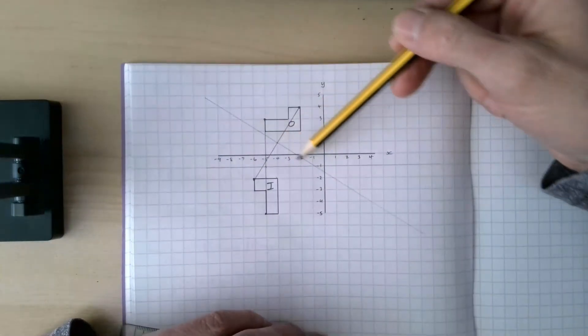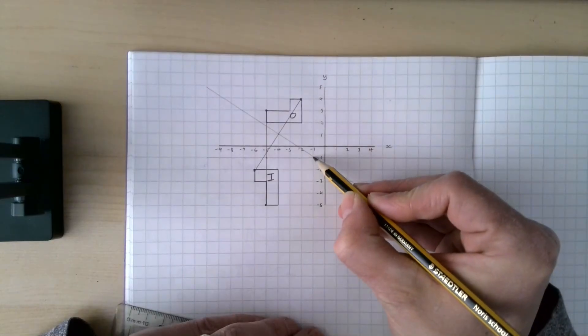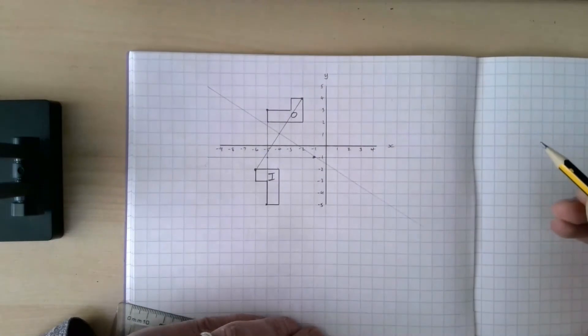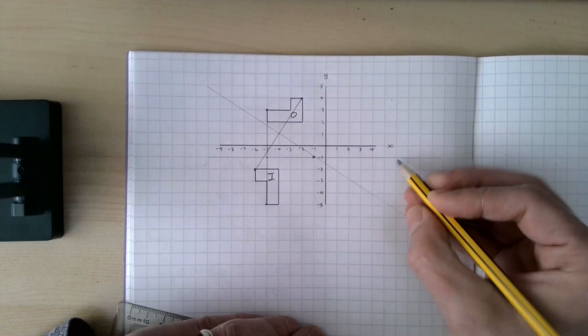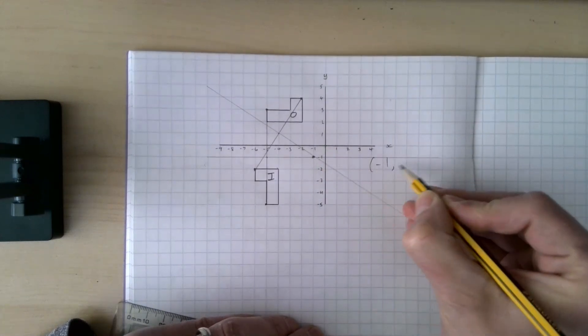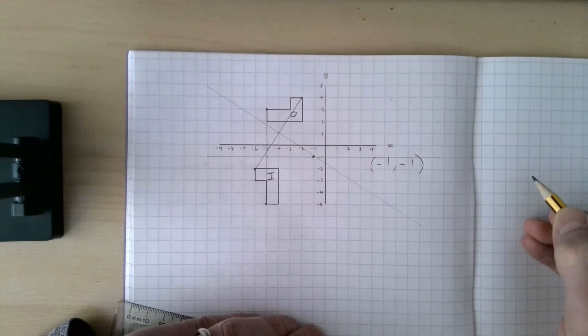Now my two perpendicular lines that I drew, they meet just about there. So that means that's where my center of rotation is. Coordinates minus one comma minus one. There we are, good luck.